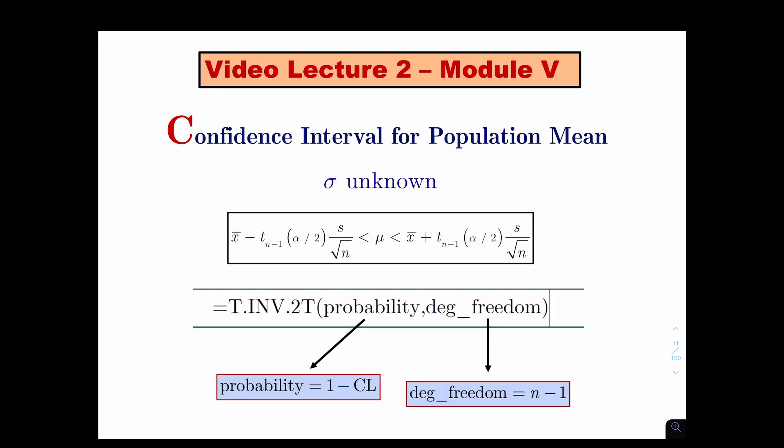Welcome to my second video lecture on module 5 PowerPoint. In this video, I'll be giving you the formula you use to construct the confidence interval for a mean of a population, and this time sigma is unknown, which means S has been provided instead of sigma.